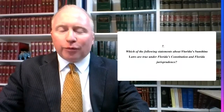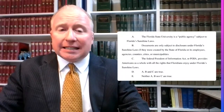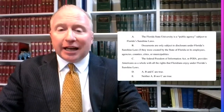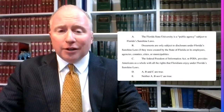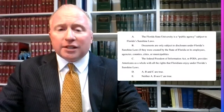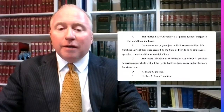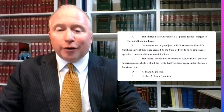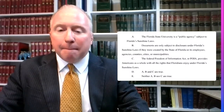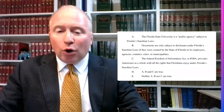Which of the following statements about Florida's sunshine laws are true under Florida's constitution and Florida jurisprudence? Choice A: The Florida State University is a public agency subject to Florida's sunshine laws. Choice B: Documents are only subject to disclosure under Florida's sunshine laws if they were created by the state of Florida or its employees, agencies, counties, cities, or municipalities. Choice C: The Federal Freedom of Information Act, or FOIA, provides Americans as a whole with all the rights that Floridians enjoy under Florida's sunshine laws. Choice D: A, B, and C are true. Choice E: Neither A, nor B, nor C are true.